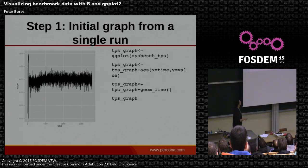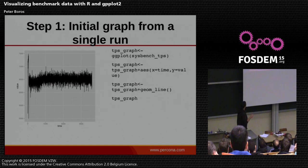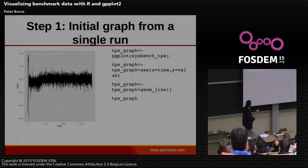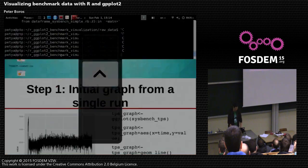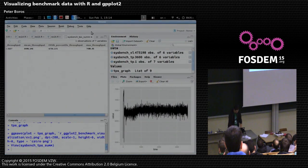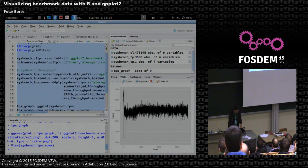For the initial graph, the R code is this — and the R code will grow during the presentation. We take just the 256-thread read-write benchmarks at first. In order to create a graph with ggplot2, you create a graph object with the ggplot function, and you add at least aesthetics and at least a geometry. In the aesthetics, I specify that the x-axis is the time, the y-axis is the value of the metric which is TPS, and I plot it as lines. You load it into RStudio and it will look like this.